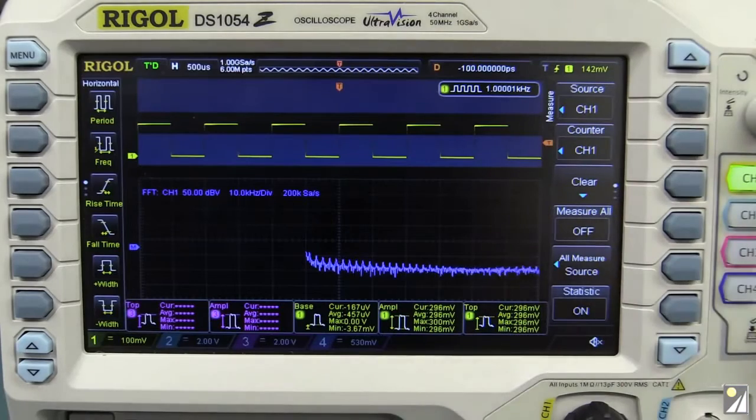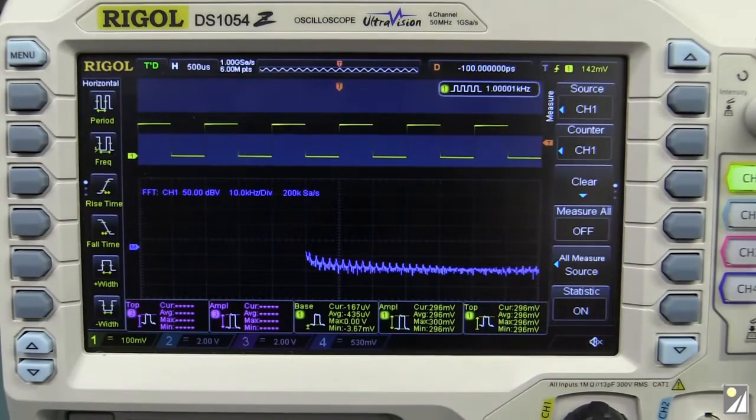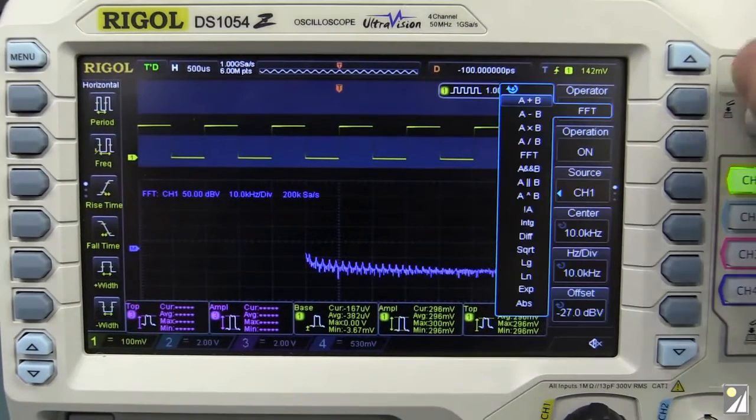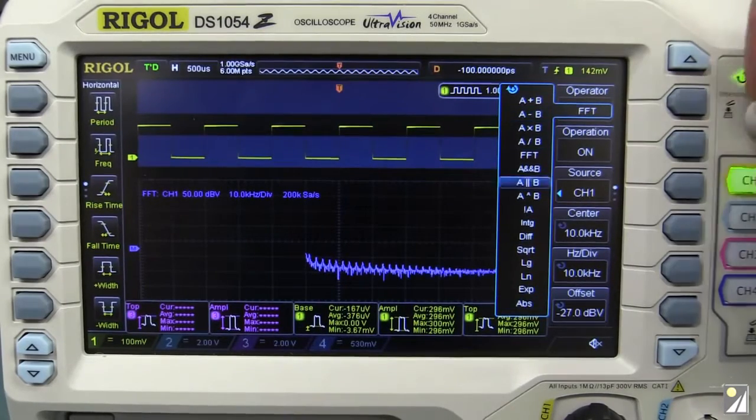And it's got your basic FFT functionality as you'd expect on a modern scope. And when you turn on the measurements and the statistics and the FFT math and everything else, it is still a reasonably responsive scope. Doesn't slow down a huge amount. It's still usable. And it's got all the mathematical operators you could possibly want. Terrific stuff in a low-end scope.